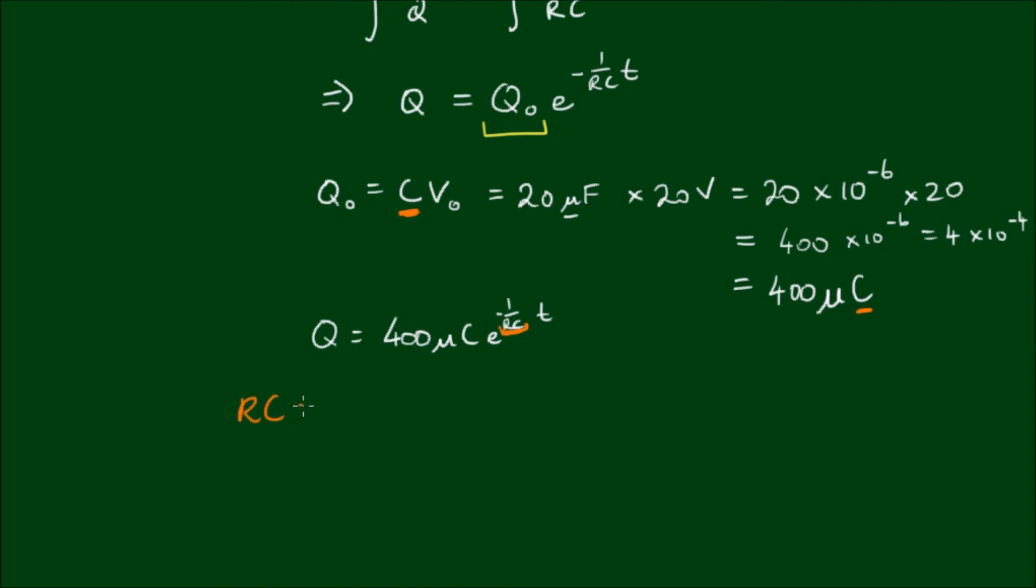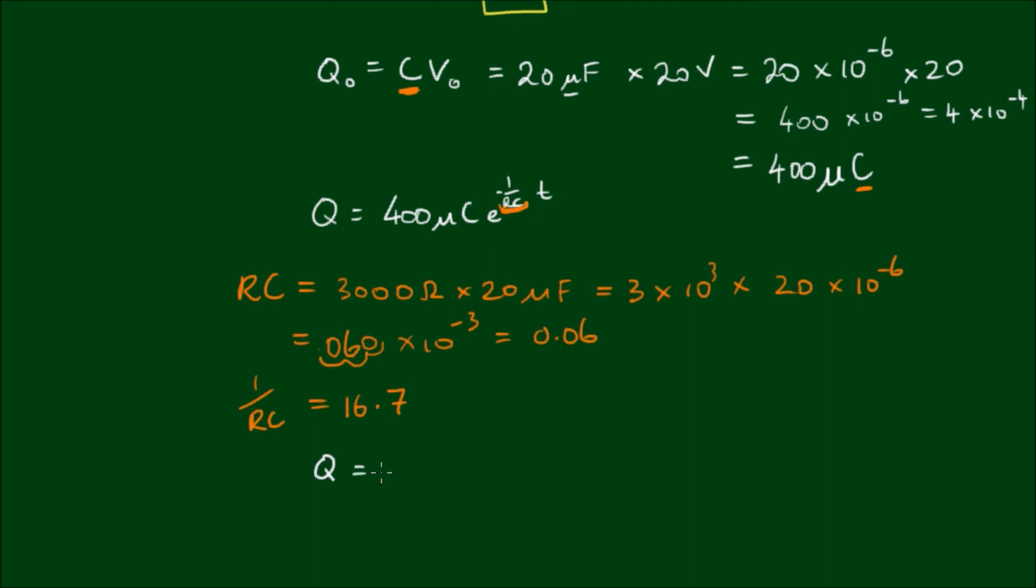So R by C is equal to the resistance, which is 3000 ohms by 20 microfarads. So this is 3 by 10 to the 3 by 20 by 10 to the negative 6. So this gives us 60 by 10 to the negative 3. So if we move the decimal place from here, 1, 2, 3, we have 0.06. And 1 divided by RC then is equal to about 16.7. So the charge is given by 400 micro coulombs by E to the negative 16.7 T.